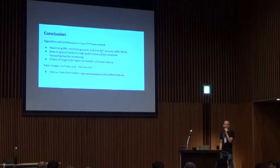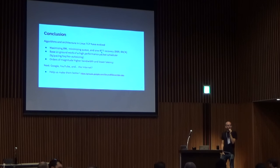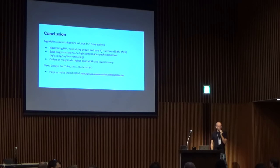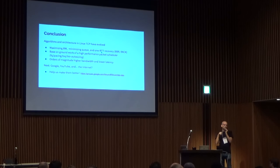Question: Given multiple flows operating at max throughput and probing for additional bandwidth, do you intelligently schedule the probes to avoid latency peaks? Answer: The gain cycling that probes for extra bandwidth is randomized, so different flows do it at different times, which tends to help with that.